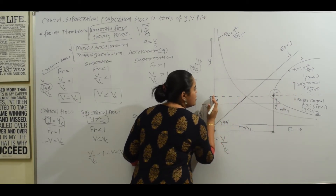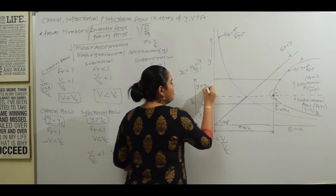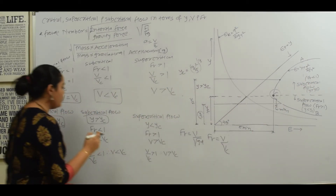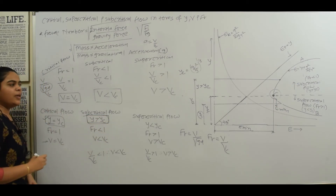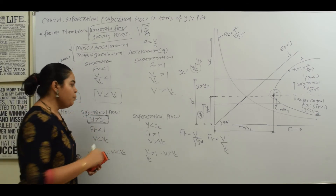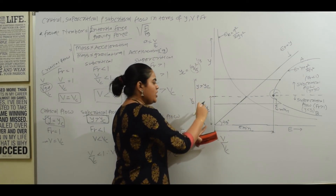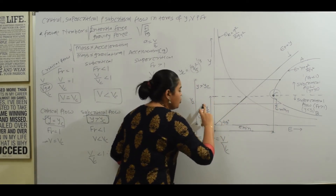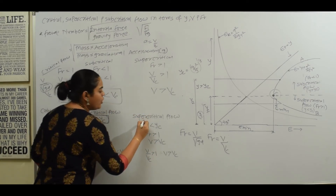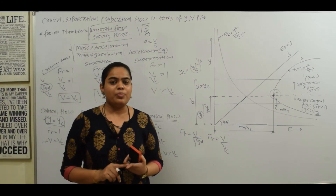On the specific energy curve, yc is the critical depth. When depth y is greater than yc and Fr is less than 1, we have subcritical flow. When the depth equals yc, we have critical flow. When the depth y is less than yc, we have supercritical flow. So flow classification can be understood in terms of velocity, depth of flow, and Froude number.